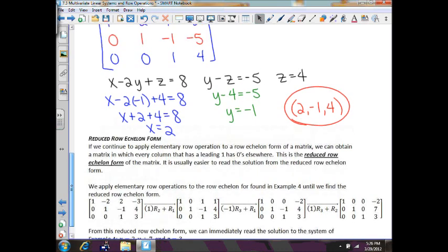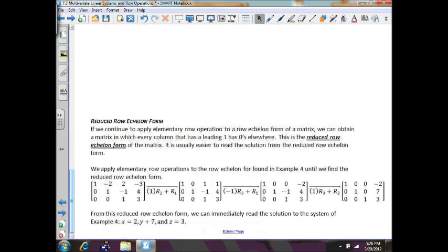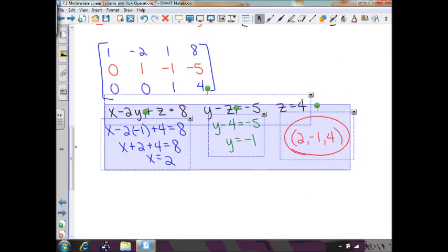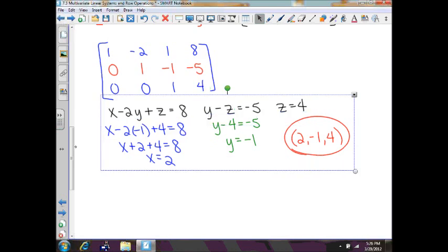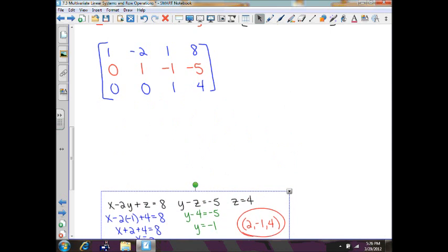Now I'm going to show you how to do reduced row echelon form right here. I'm going to move these because we really don't need these too much anymore except to check our answer at the end. Let's move these down a little bit. Now to do this, which means we need to get a zero here, a zero here, and a zero here.